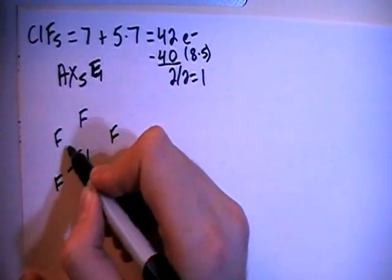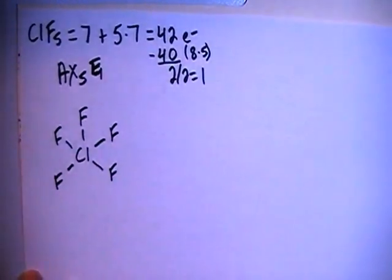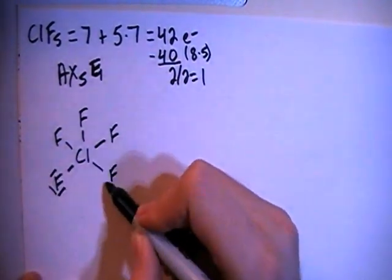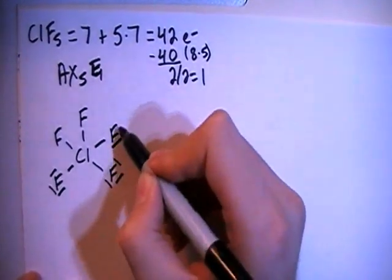We can go ahead and single bond each of the fluorines to the central chlorine, as well as filling in each of the fluorines' octets to give them their full 8 electrons.